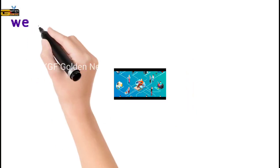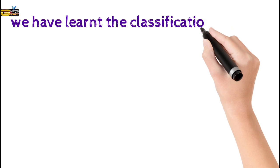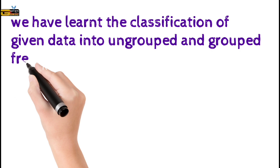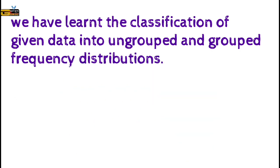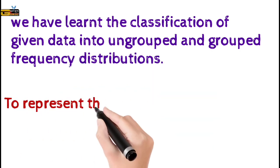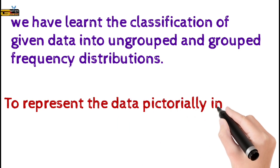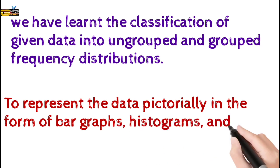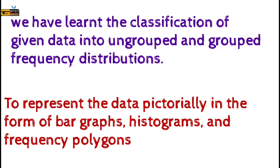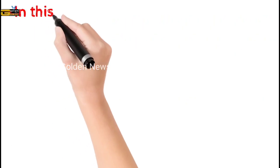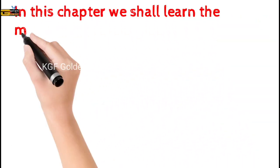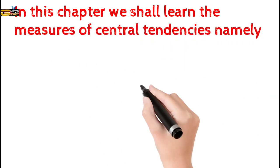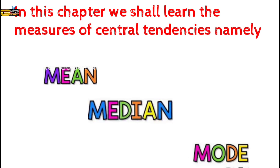We have learnt the classification of given data into ungrouped and grouped frequency distributions, and also to represent the data pictorially in the form of bar graphs, histograms and frequency polygons. In this chapter, we shall learn the measures of central tendencies, namely mean, median and mode.